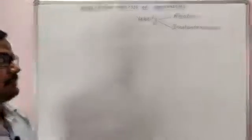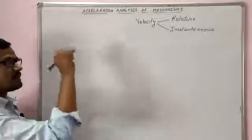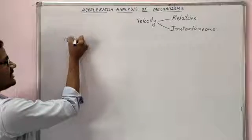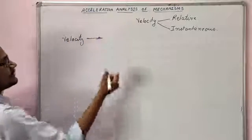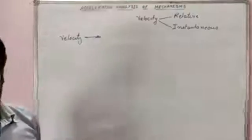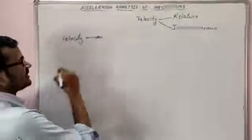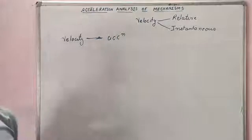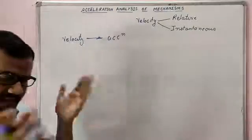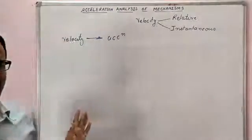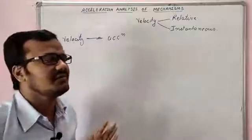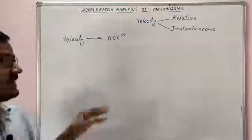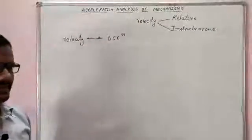Now let us move forward and analyze the accelerations of the links of mechanisms. When we talk about acceleration, if we can analyze velocities, then the rate of change of that velocity is nothing but acceleration. If velocity is not changing — that is, uniform velocity — then acceleration is zero.